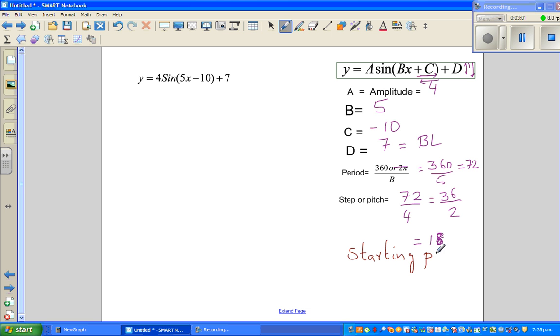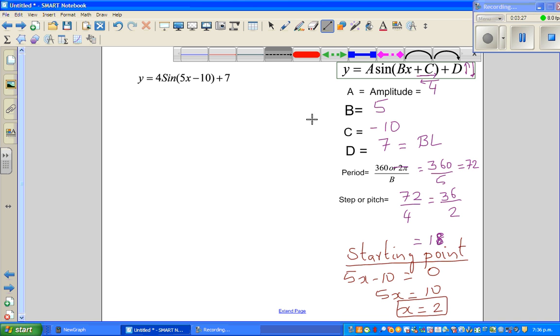For previous graphs when you don't have C, the starting point is 0. Whereas here, there is a transformation. The sine graph has moved to the right. So let me set this equal to 0. If you set 5x minus 10 equal to 0, so 5x equals 10, x equals 2. So your sine graph starts at 2.